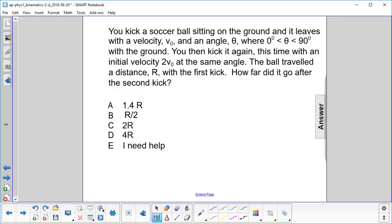You kick a soccer ball sitting on the ground and it leaves with a velocity v0 and an angle theta, where theta is between 0 degrees and 90 degrees with the ground. You then kick it again, this time with an initial velocity of 2v0 at the same angle.